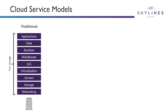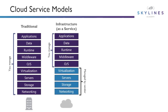Cloud came along after virtualization, built upon that idea, and gave us additional models. The first one being infrastructure as a service, also known as IaaS. The big difference is that we no longer manage those bottom four pieces of the stack — networking, storage, servers, and virtualization. In the Azure world, Azure will manage all of those for us. We don't have to physically plug cables in, rack storage arrays, or maintain our own virtualization layer like VMware or Hyper-V. You do, however, still need to manage the operating system up the stack itself.